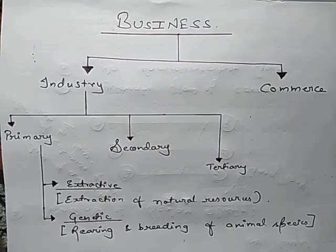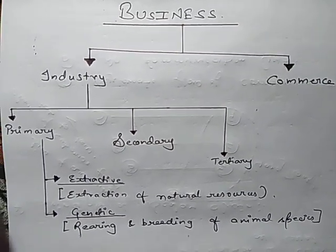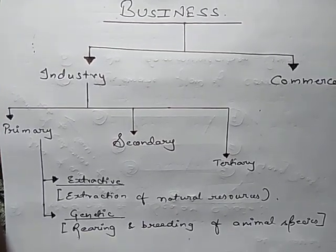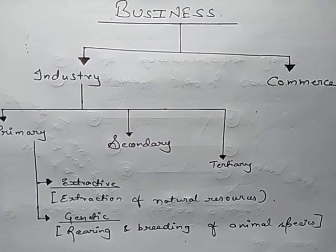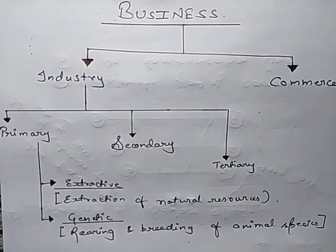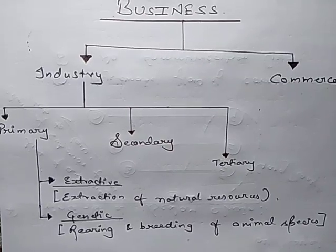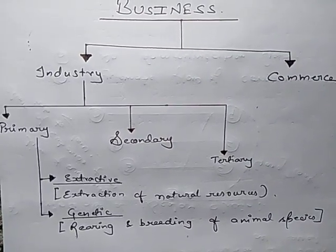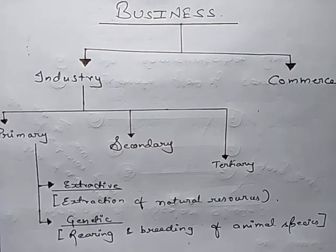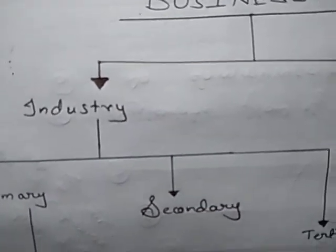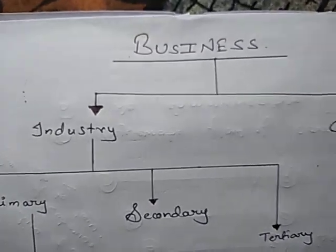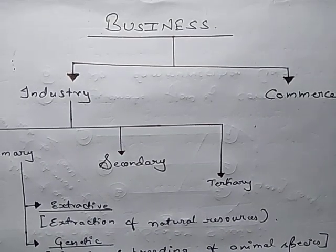Hello children. In the last videos we have already discussed the meaning, concept, characteristics, and objectives of business. We also understood the role of profit in business. Today in this video we will discuss the types of business activities. All business activities are categorized into two basic types: the first one is industry and the second one is commerce.